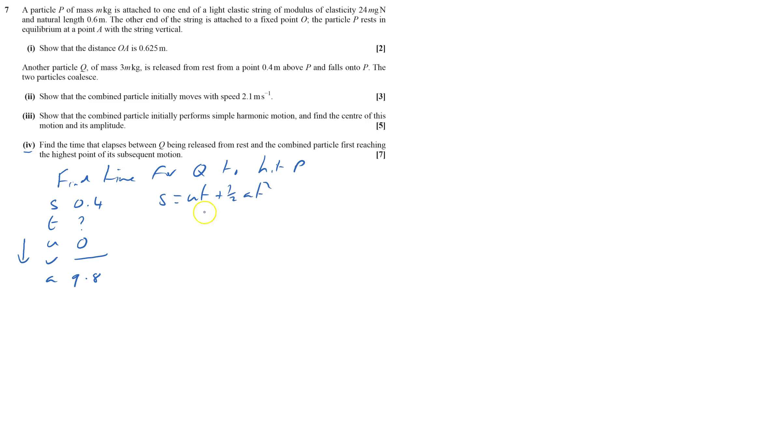So 0.4 equals 0 plus a half of A is 4.9 T squared. That means that T squared equals 0.081636253. And T equals 0.285714286. And that's the first time.